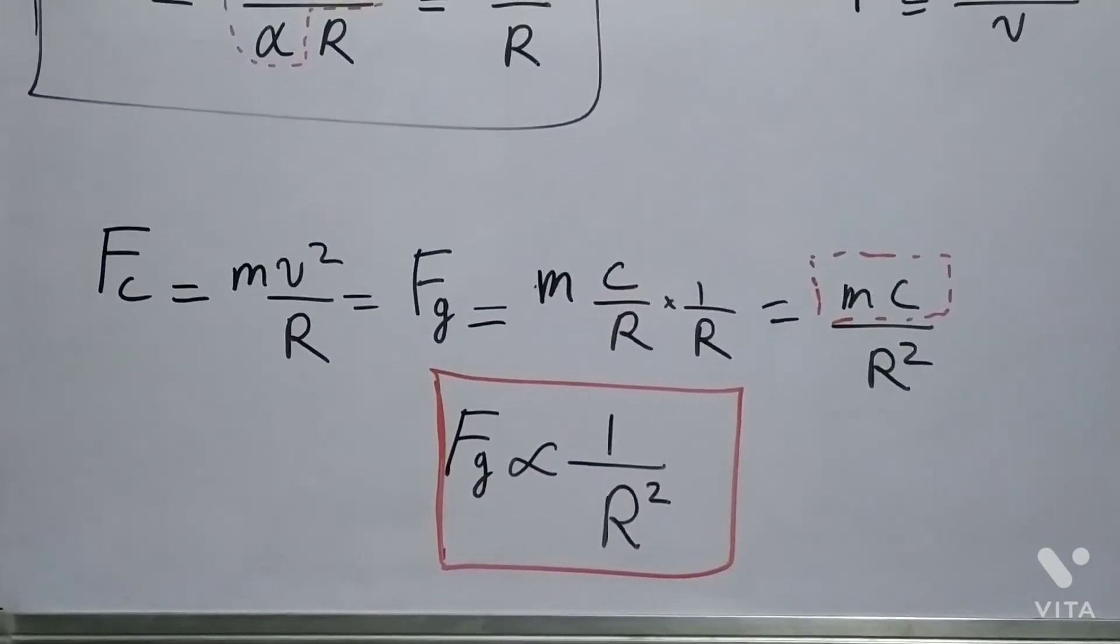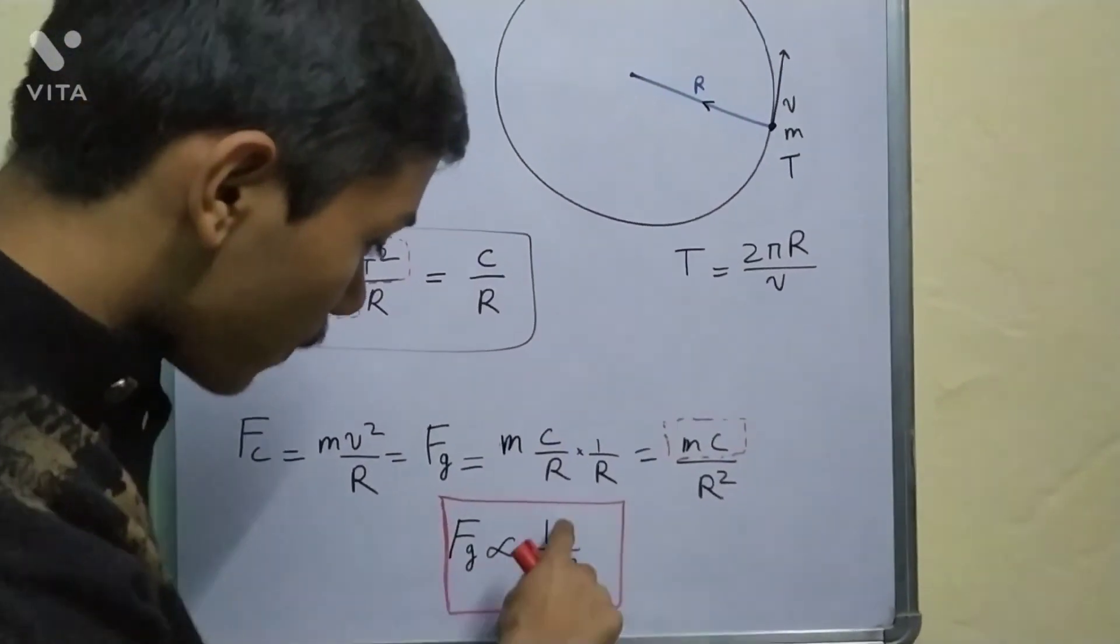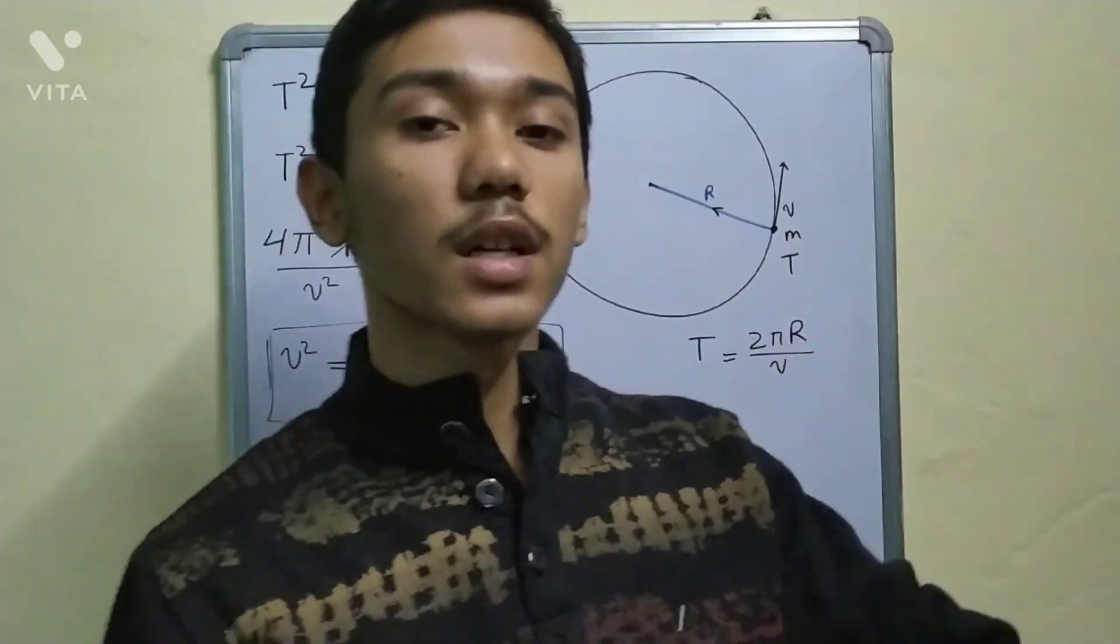This is what Newton realized—that the force is inversely proportional to 1 upon r²—and this relation is known as the inverse square law.